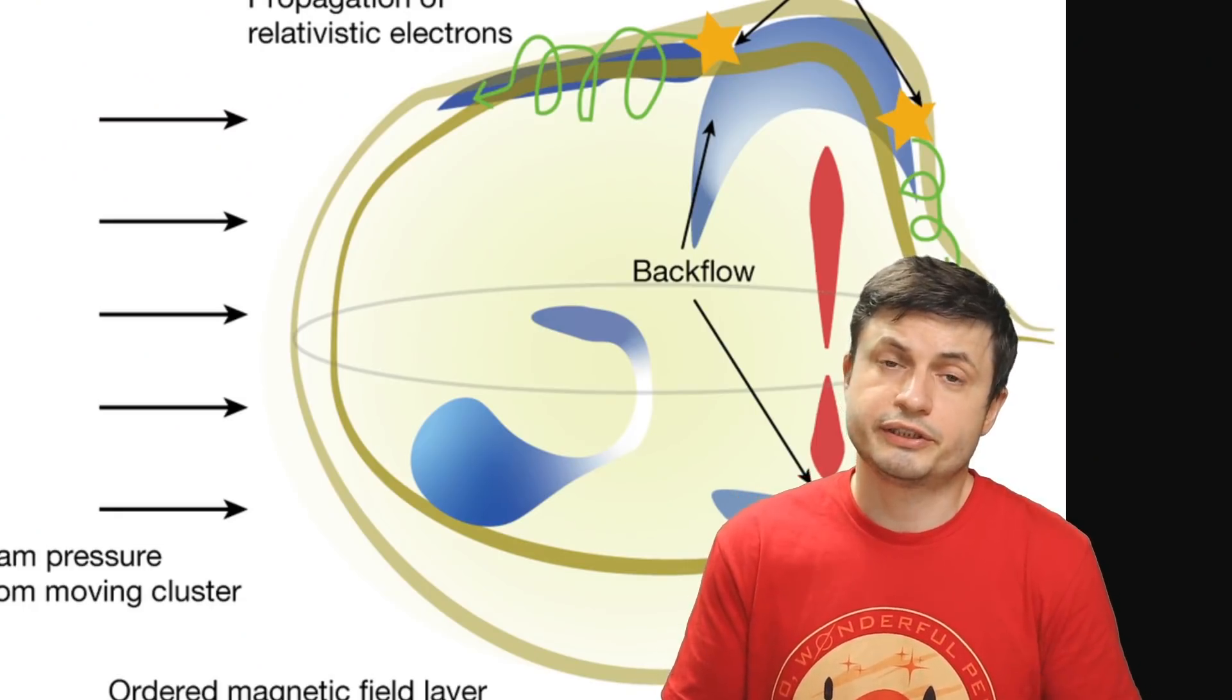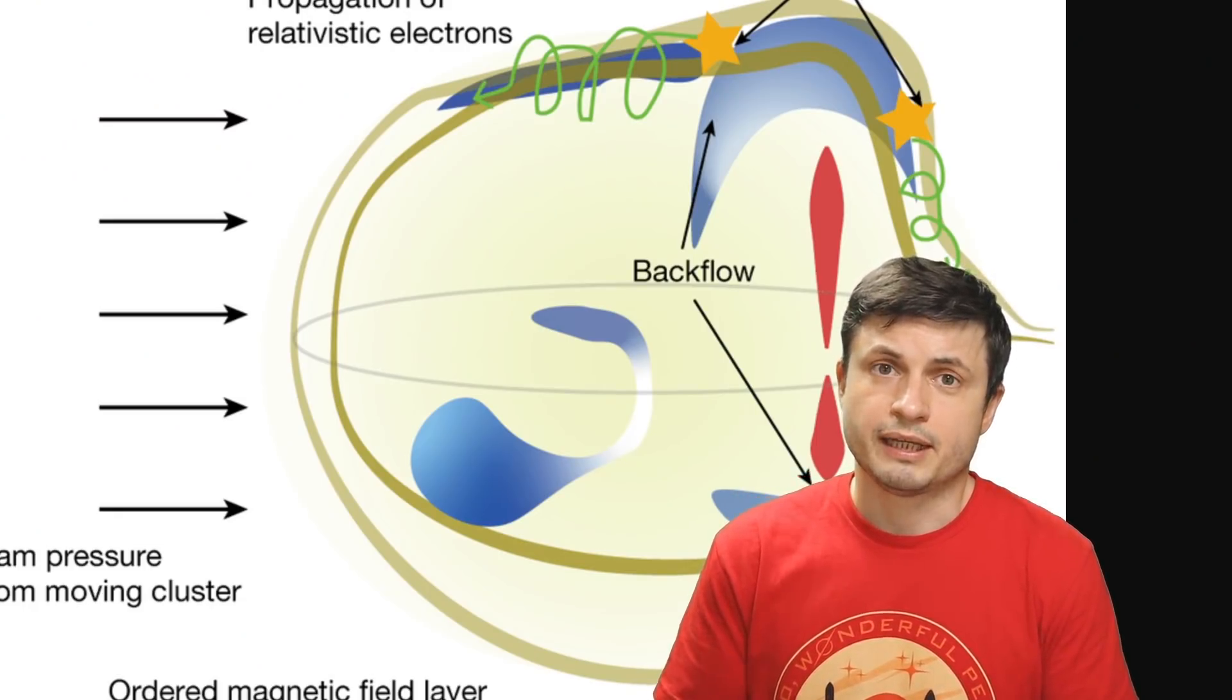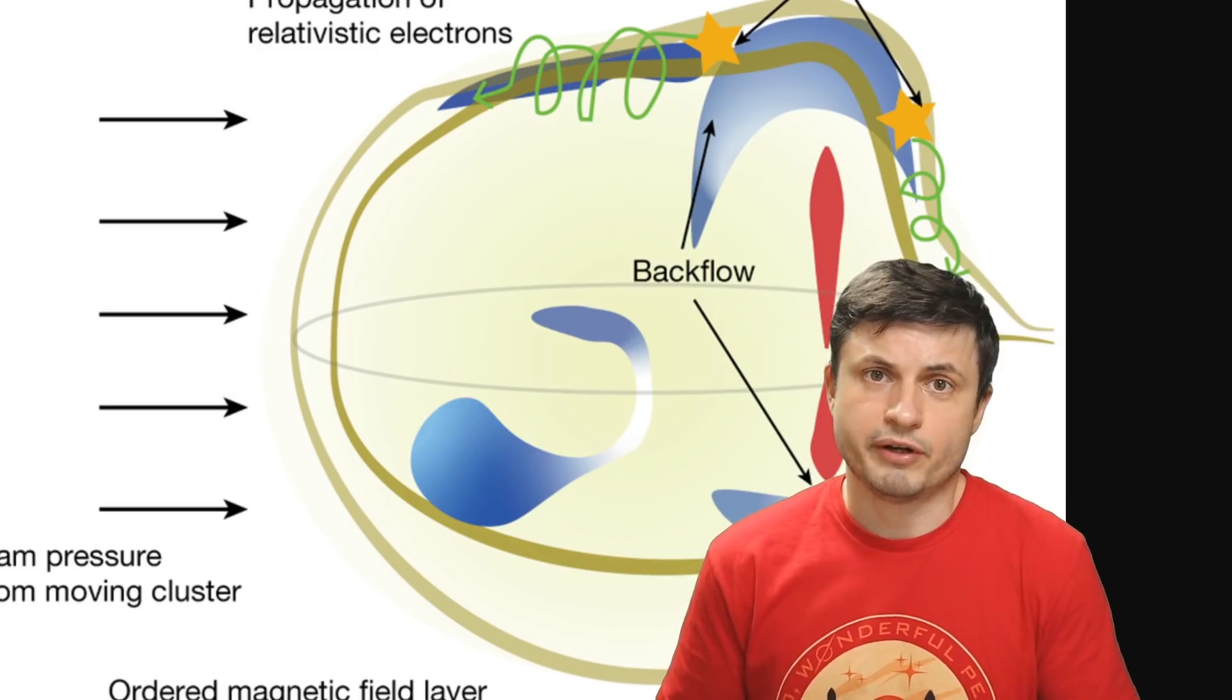And so I guess the question is what exactly formed it? And the explanation that the scientists provide so far is sort of related to the way that the galaxies interact with one another. As they move around and as they sort of pass through each other's regions they usually leave behind a lot of different wakes, a lot of gas-like formations.